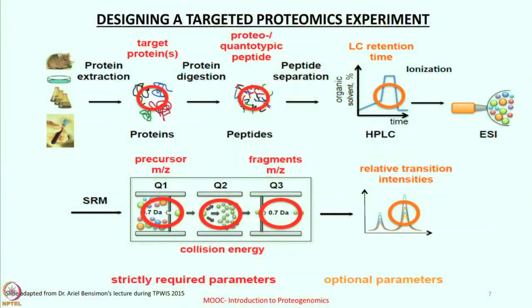One needs to have a clear idea of the precursor mass-to-charge ratio and the fragment mass-to-charge ratio. The precursor mass-to-charge ratio corresponds to the mass-to-charge value of the peptide of interest, and the fragment mass-to-charge corresponds to the mass-to-charge of the fragment resulting from fragmentation of the precursor peptide. Having an idea of each of these parameters would largely determine the success of an experiment, and I urge you to look at different tutorials and lectures available which cover these topics in much more detail.